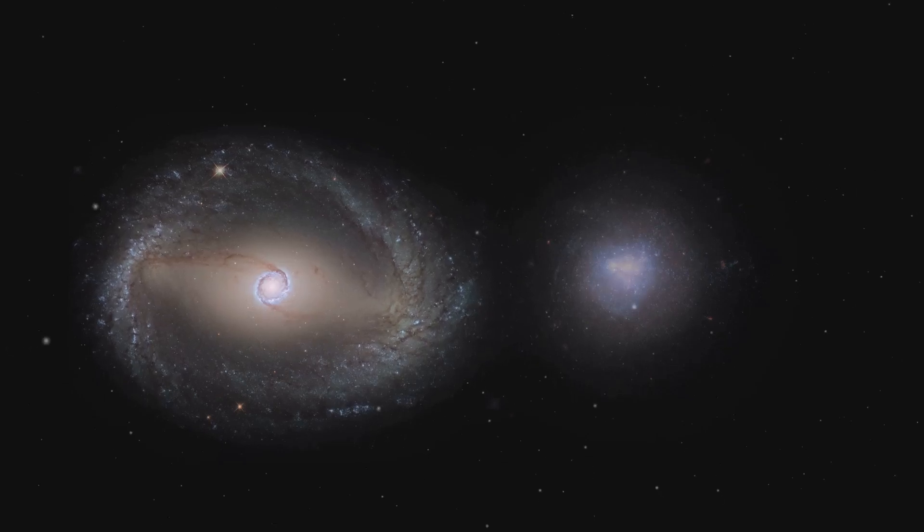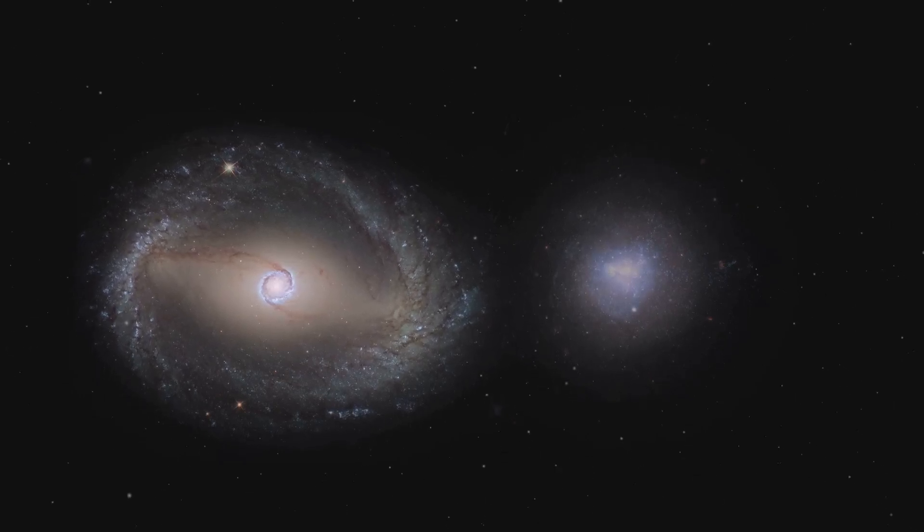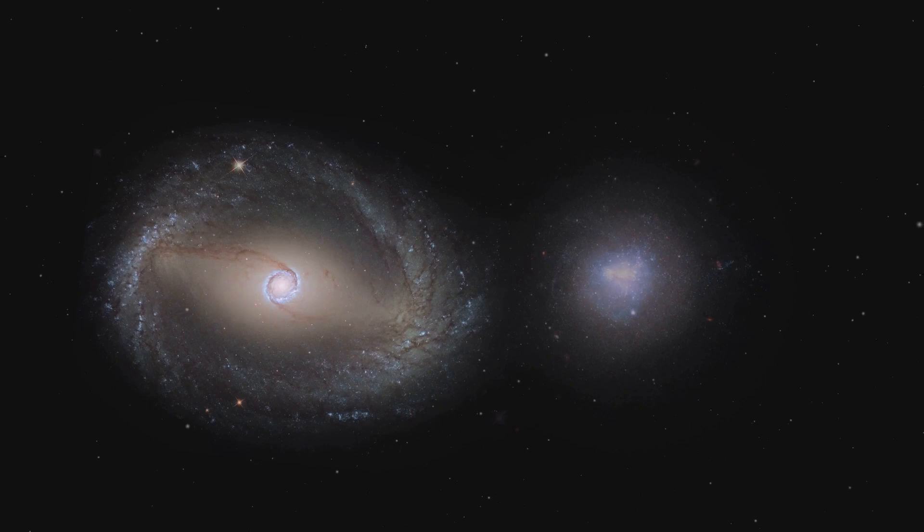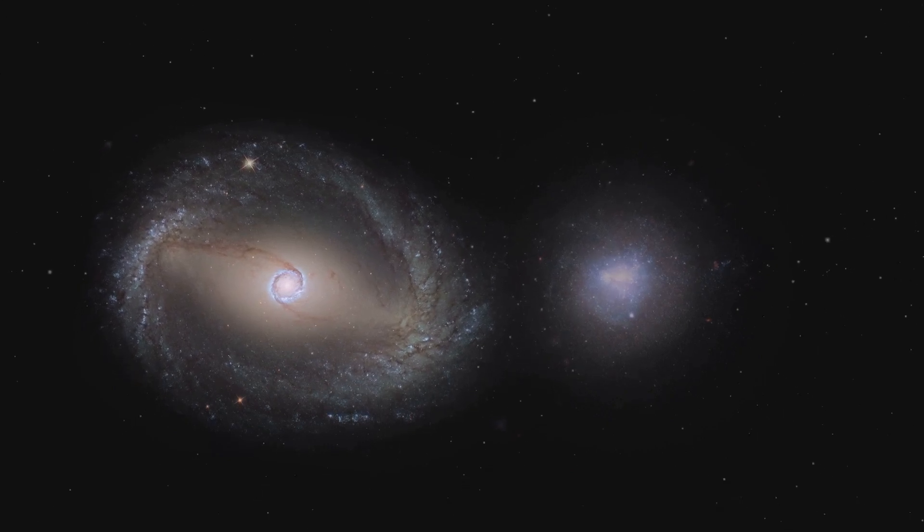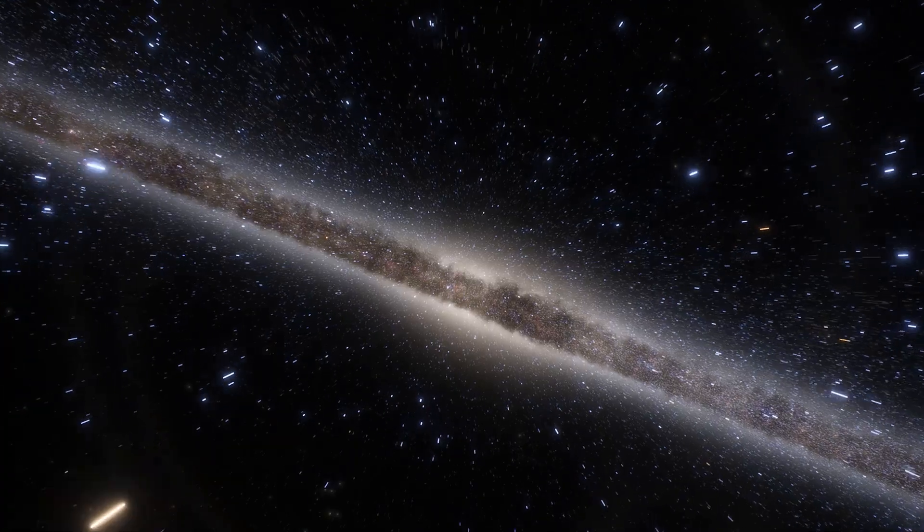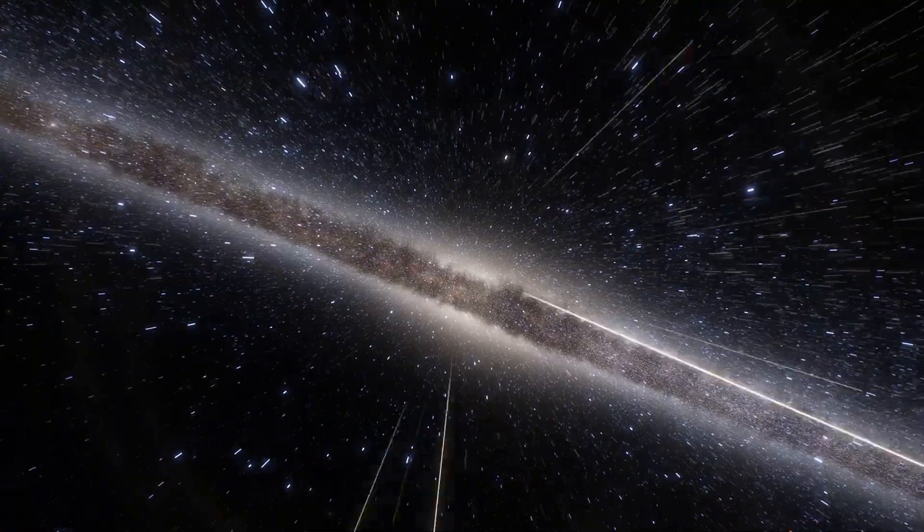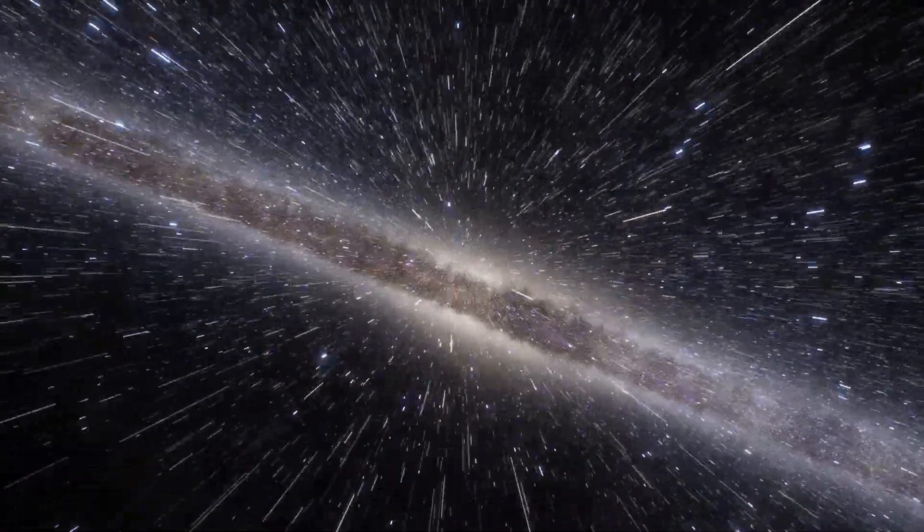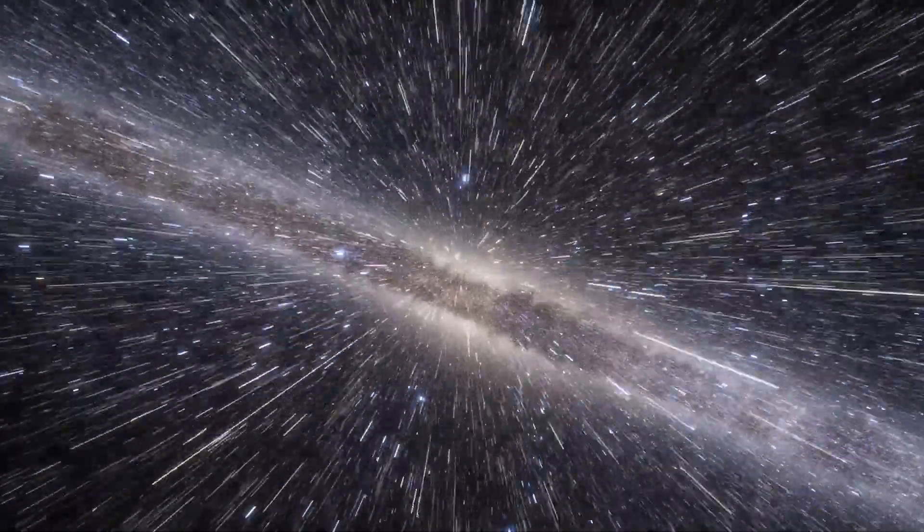This expansive size raises questions about how such a structure could form in an era when the universe was still dominated by dense, chaotic conditions. Most galaxies at similar redshifts are compact, lacking the extended disks and well-defined features seen in Zulong.